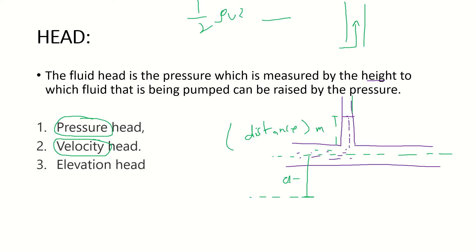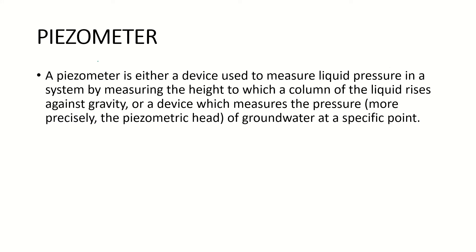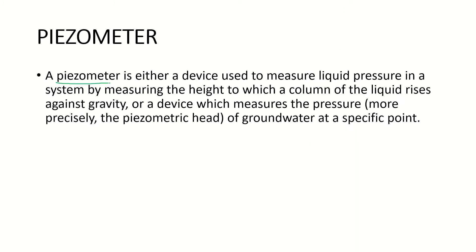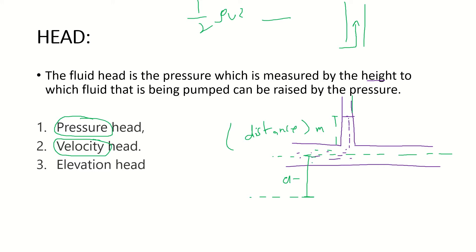So we have velocity head, elevation head, and pressure head. The tube used to measure pressure head is known as a piezometer. A piezometer is a device that measures liquid pressure in a system by measuring the height to which a column of liquid rises against gravity. It measures the piezometric head of groundwater at a specific point. For velocity head and elevation head, similar measurement approaches are used.